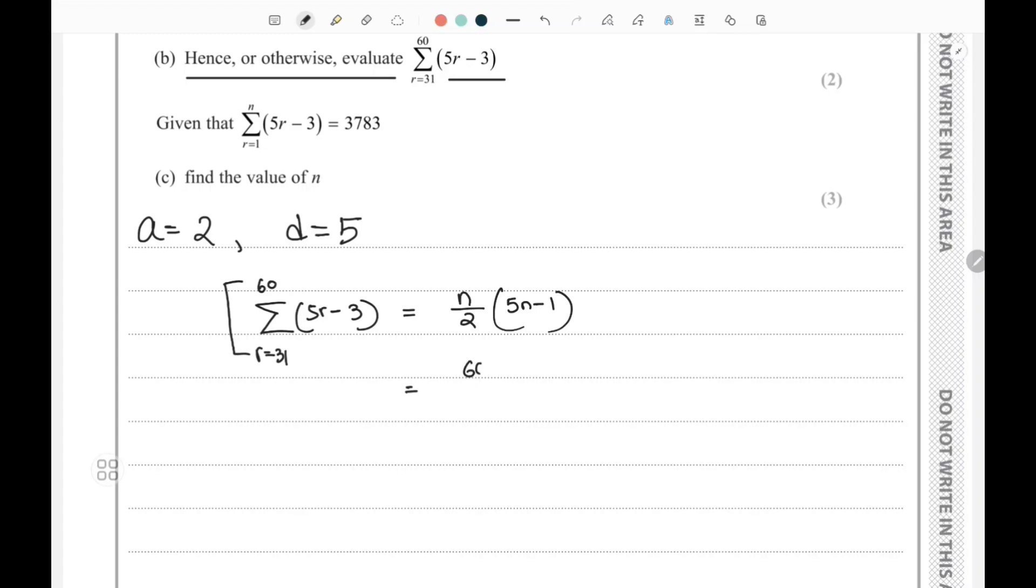We're going to find the entire summation first, from 1 to 60. So 60 divided by 2 times (5 times 60 - 1). And then we are going to subtract from this entire part, we're going to subtract 30 divided by 2.